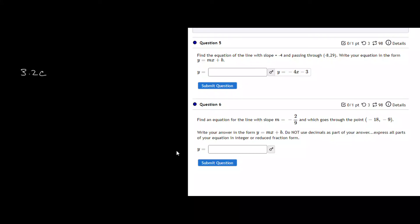So this question might be a little different for you. They are giving us two pieces of information in question 5. Question 5 says find the slope, find the equation of the line.